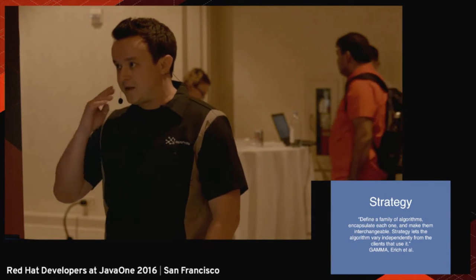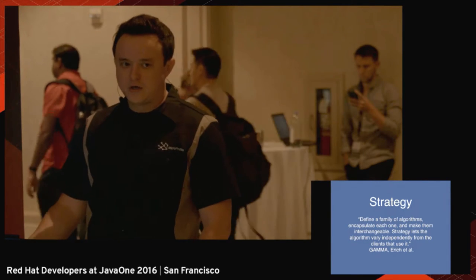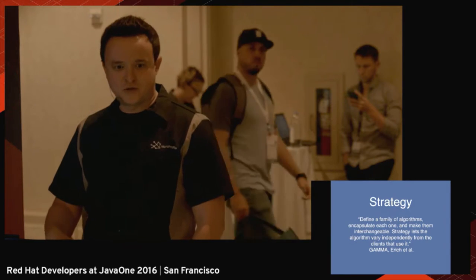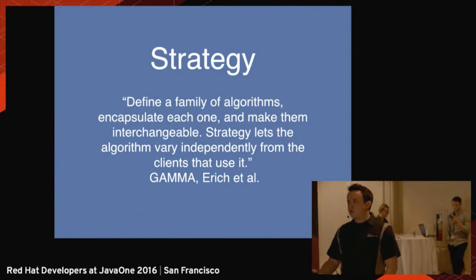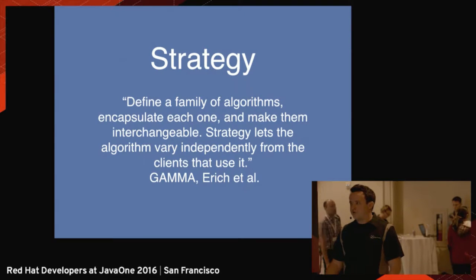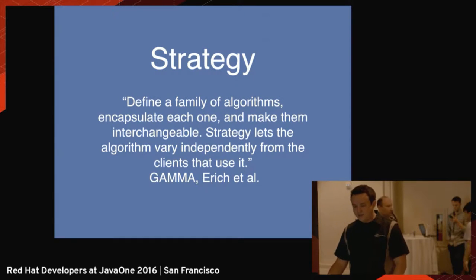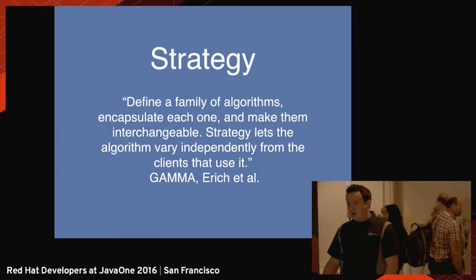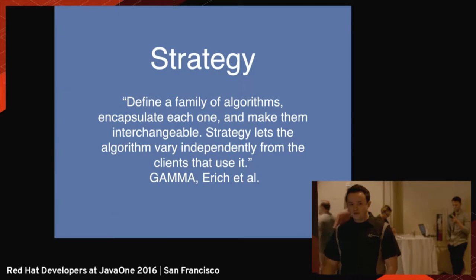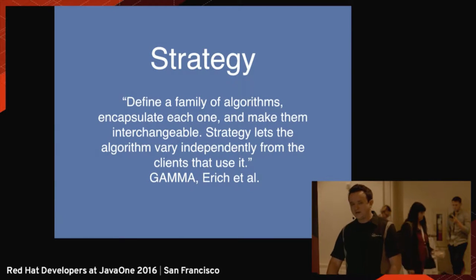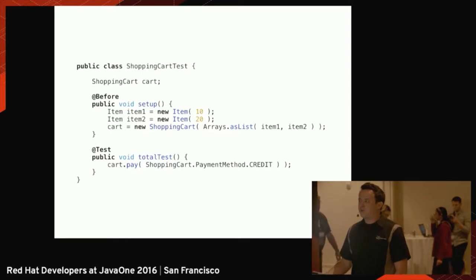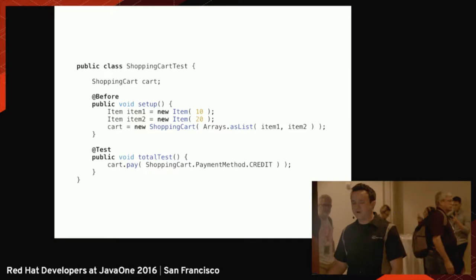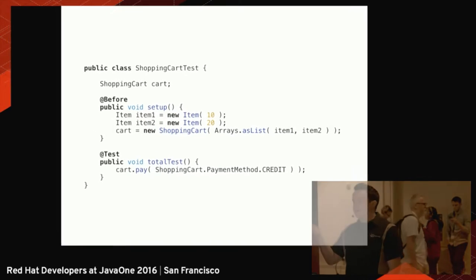The first one is the strategy pattern. What should a strategy look like if I'm moving from object-oriented software to functional programming? Usually a strategy is used to define a family of algorithms, encapsulate each one, and make them interchangeable. I love the definition, but I prefer to learn that by example. In our example, you have a shopping cart, and this shopping cart has a lot of items. Here I add two items.